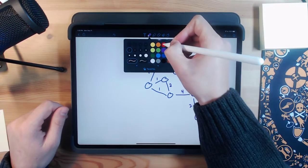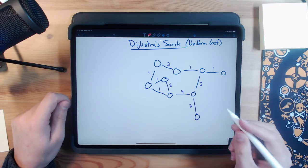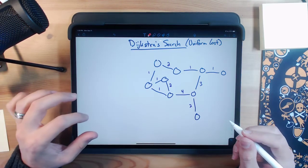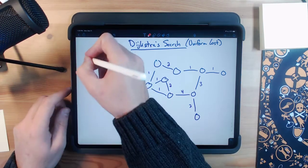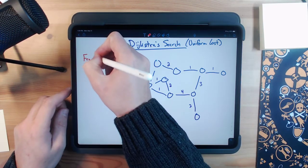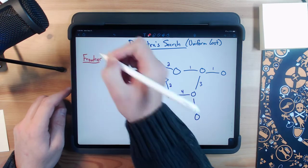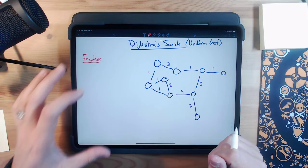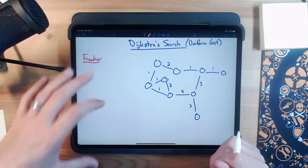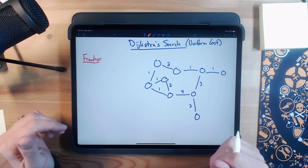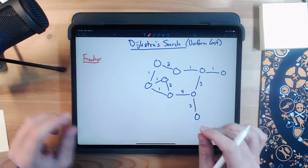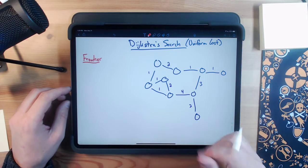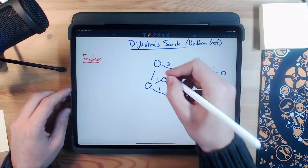The way that this algorithm works is very similar to breadth-first search. The only difference is that we are going to turn our frontier into a priority queue. Previously, our frontier would be the list of nodes that we need to explore next, and we would put these in a regular queue and then process them one by one. With Dijkstra's search, we're going to put them in based on the cost of that node or the cost to traverse to that node. Let's do a quick example.